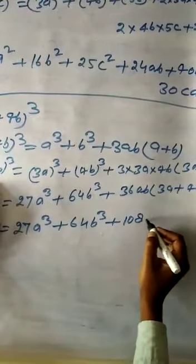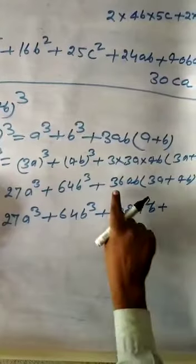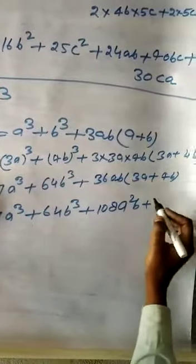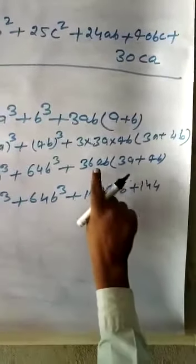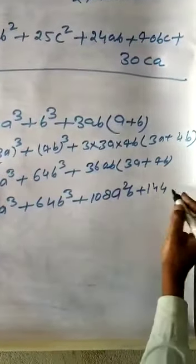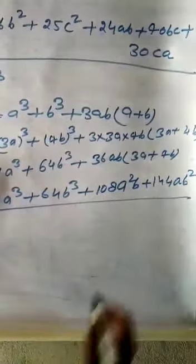So we get 27A cube plus 64B cube plus 108A square B plus 144AB square. This is the answer.